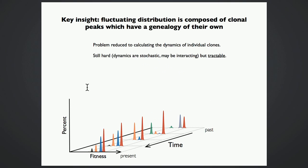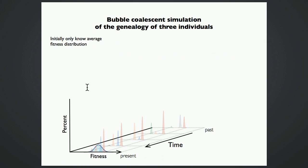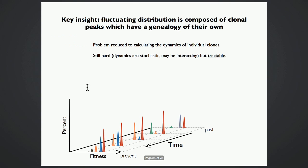So a key insight that we have used that has made this problem tractable is noticing that this distribution is not fluctuating in some random, intractable way, but that these peaks that we see represent individual clones, that they have a genealogical logic to their own. And so if we could use our insights, our understanding of the dynamics of individual clones, maybe we could do something to reconstruct how this structure is varying as a function of time and then reconstruct the individual genealogies within it. Now, this is still a hard problem because these clones are fluctuating stochastically. They may be interacting in some complicated way, but it's tractable. And we've called this method that does this the bubble coalescent in reference to the transient presence of the clones in the population.